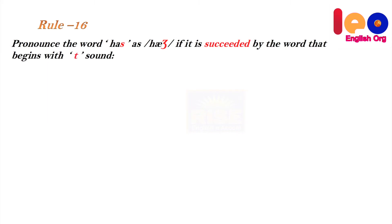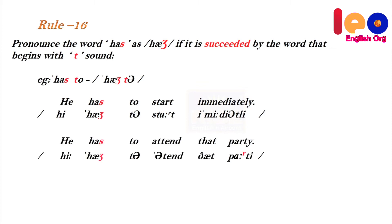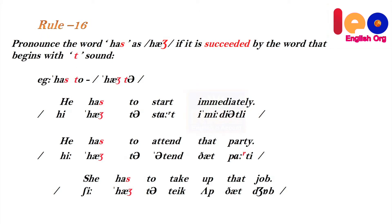Rule 16: Pronounce 'has' as 'haz' if it is followed by a word that begins with a 't' sound. Example: 'has to' — say 'haz to'. He has to start immediately. He has to attend that party. She has to take up the job. Don't say 'has' when the word 'to' follows has — pronounce it as 'haz'.